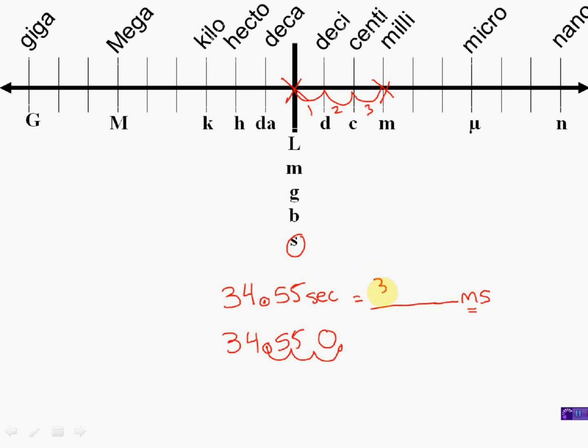So my new answer is three, four, five, five, zero milliseconds. That's cool. 34,550 milliseconds. That's a really easy conversion, isn't it? You're just literally starting off and finding out where you belong on the number line and finding out where you're going to. Let's try one, but let's go in the opposite direction.